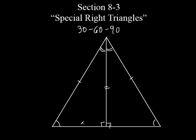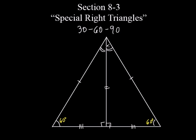Since the two triangles are congruent, these two angles are equal to each other as corresponding parts, and these two bottom segments are equal to each other. Now, this is an equilateral triangle, so every angle must be 60 degrees — remember, an equilateral triangle is also equiangular. So each bottom angle is 60, and the top angle is 60 as well. But since the perpendicular bisects the top angle, each half must be 30 degrees.